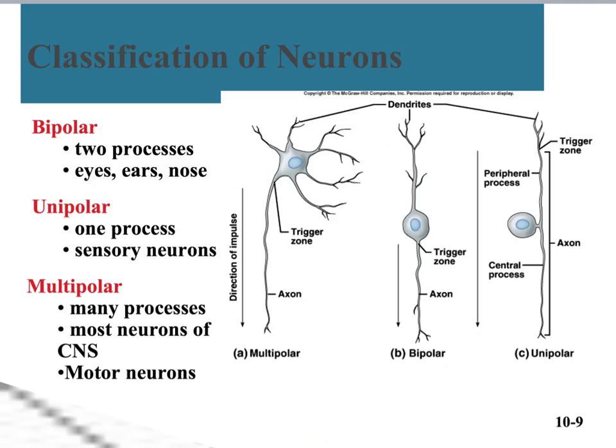Neurons can be classified by their structure or their function. Looking at different structures, the most common type is the multipolar neuron — multi for many — and we see many branches coming off of the cell body. Multipolar neurons are primarily found in the central nervous system, and our motor neurons are also multipolar. That's the type you're going to have to learn how to label.